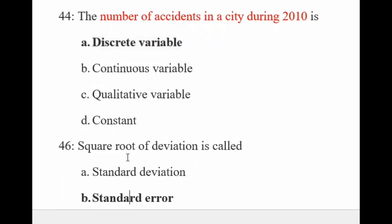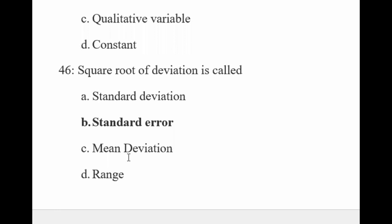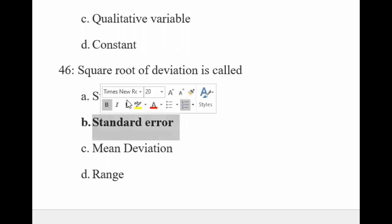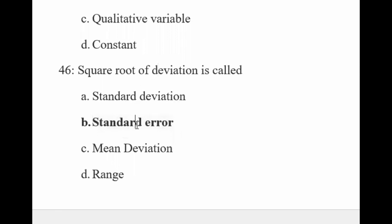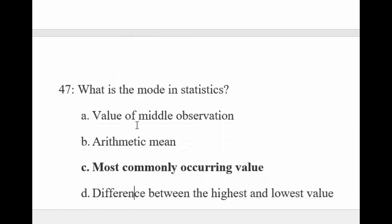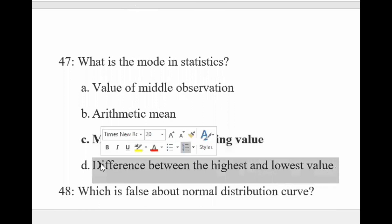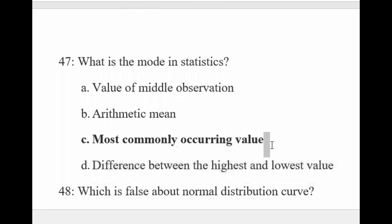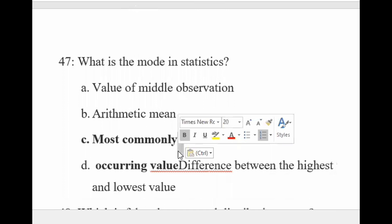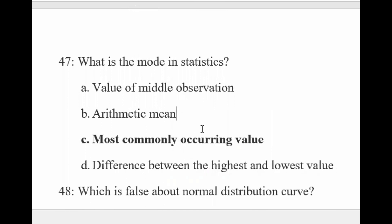The square root of variance is called standard deviation — no, mean deviation — no, range — no; it is standard error. When you take the square root of variance, we call it standard error. Mode in statistics: middle value — no, that is mean (arithmetic mean). Difference between highest and lowest value is range. The most occurring value is called the mode.